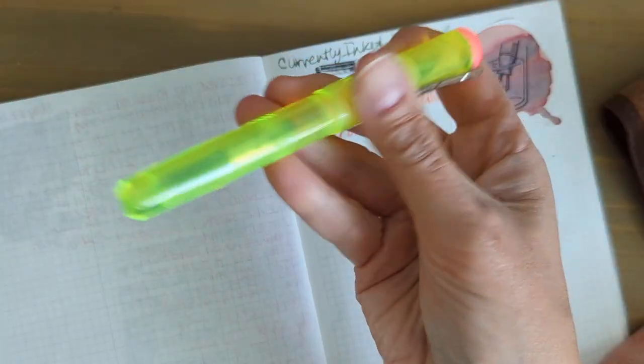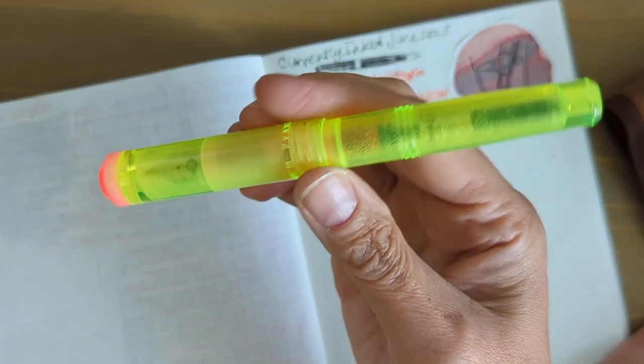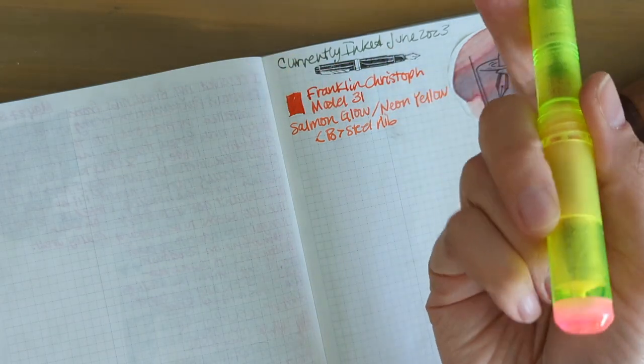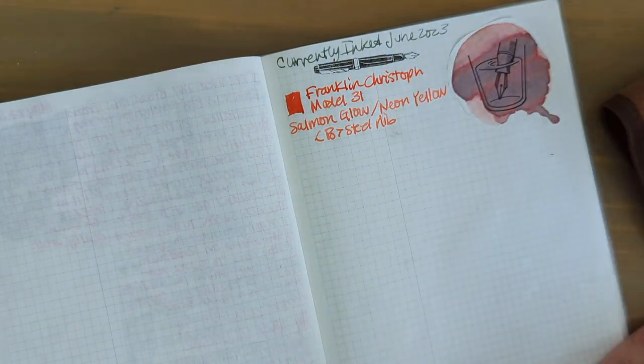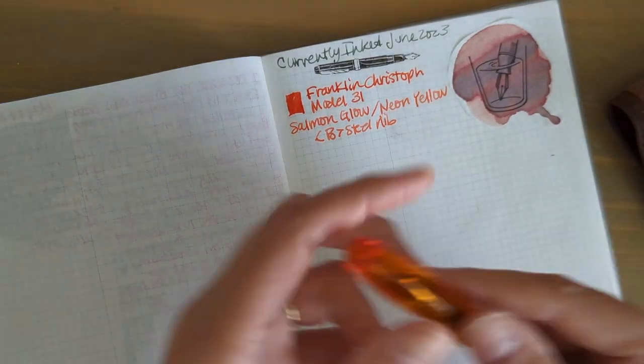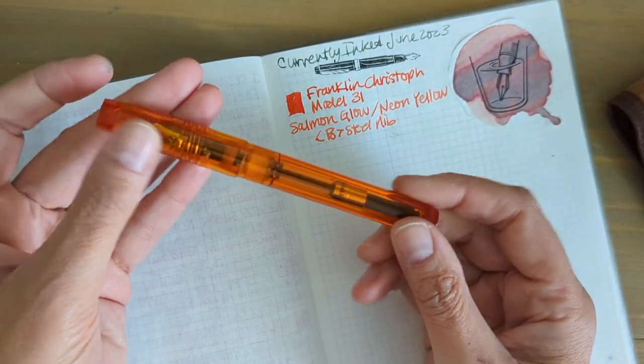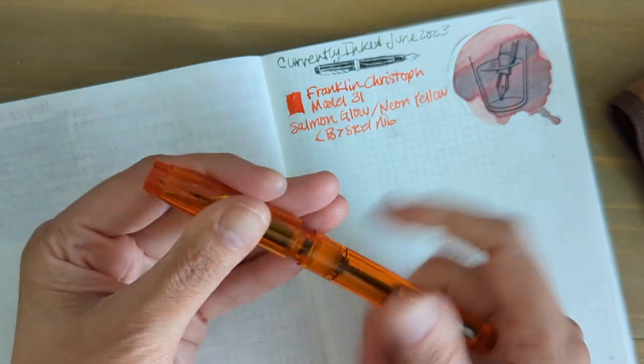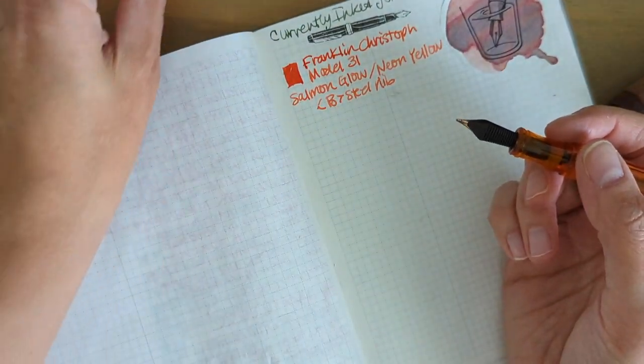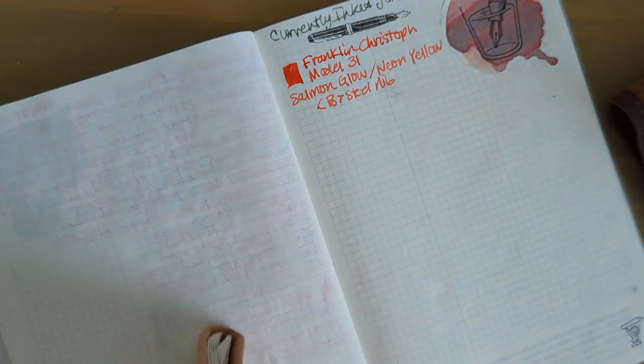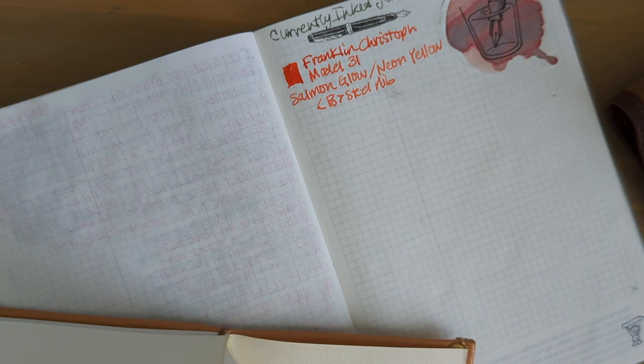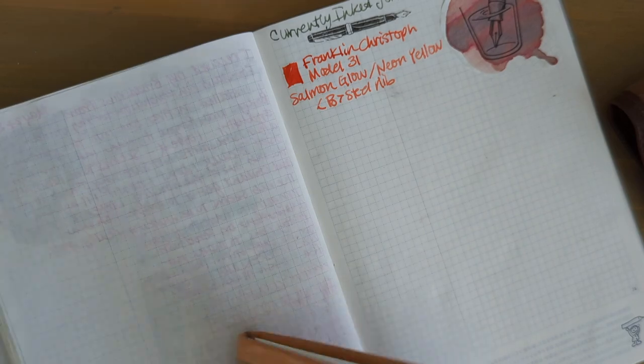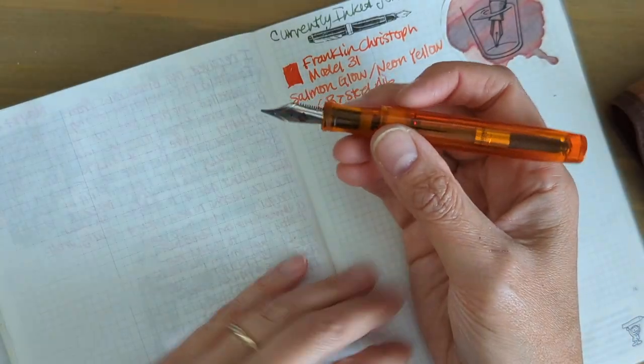It's a cartridge converter. I'll show you the second Franklin Christoph. This is my birthday pen. My husband gave me money for a pen and this is what I chose. This is the Franklin Christoph model 46. The color is orange ice.